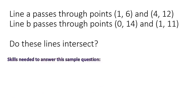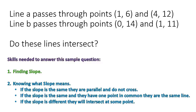Let's talk about what skills you will need to answer this type of question. First, you need to know how to find slope — slope is how steep or shallow a line moves up and down. If the slope is the same, the lines are parallel and they either do not cross, or if they share one point in common, they are exactly the same line and intersect everywhere.